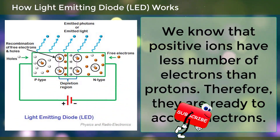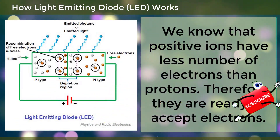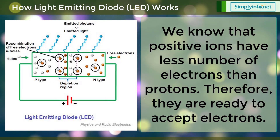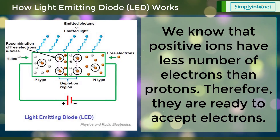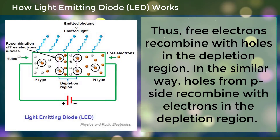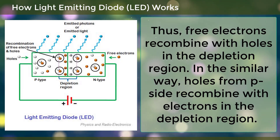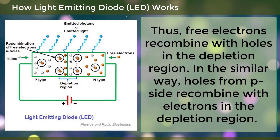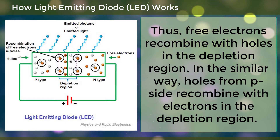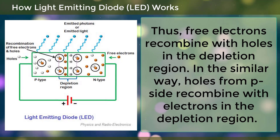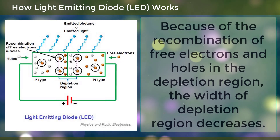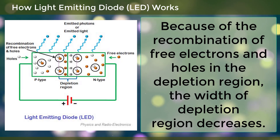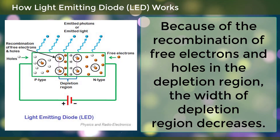Positive ions have fewer electrons than protons, so they are ready to accept electrons. Thus, free electrons recombine with holes in the depletion region. In a similar way, holes from the P side recombine with electrons in the depletion region. Because of this recombination of free electrons and holes in the depletion region, the width of the depletion region decreases.